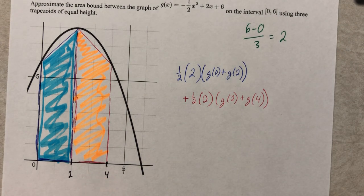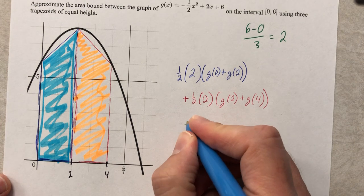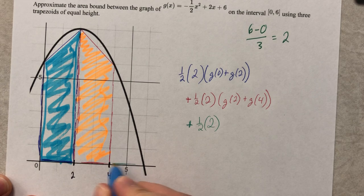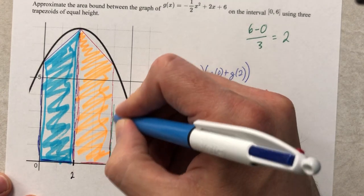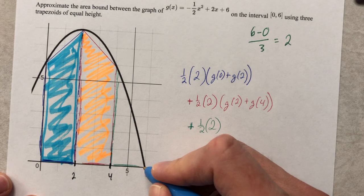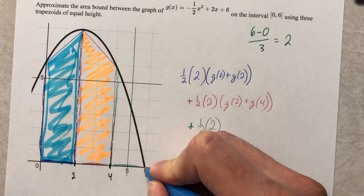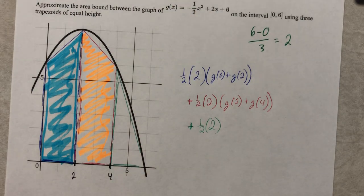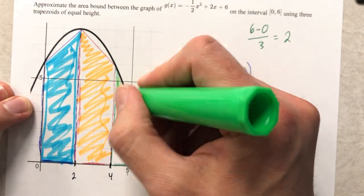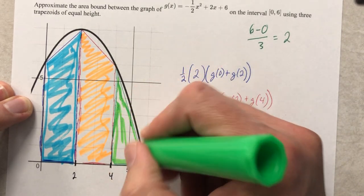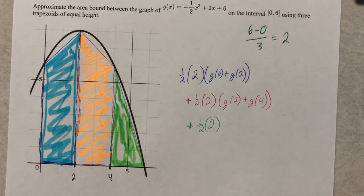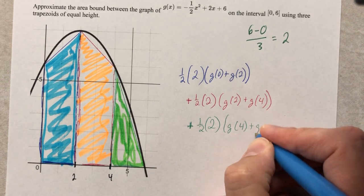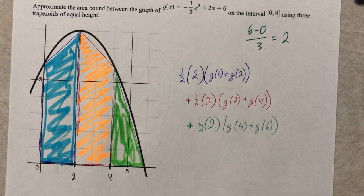Next one is also a trapezoid of awkward proportion. One half, two. And then this is one of the bases. And the other base is zero, which really just makes this a triangle. But for the sake of the lesson and the fact that we're dealing with trapezoidal sums, I'm going to treat it like the trapezoid that I want it to be. G of four plus G of six, which is zero.